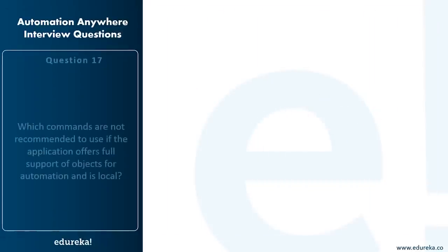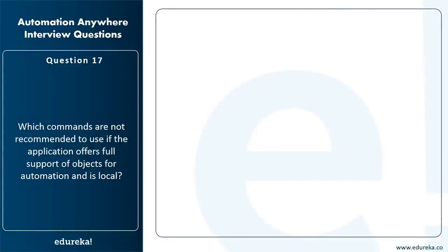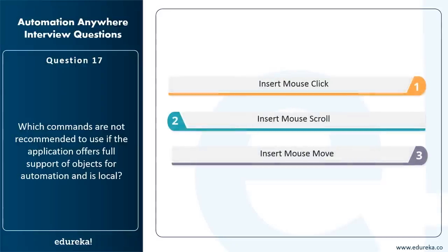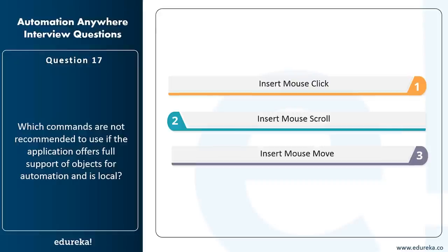Which commands are not recommended to use if an application offers full support of objects for automation and is local? The commands not recommended are: Insert Mouse Click, Insert Mouse Scroll, and Insert Mouse Move. These mouse-click-action commands are not recommended because if the application offers full object support and the objects can change, using these mouse-action commands can cause errors.